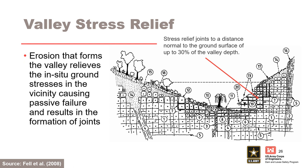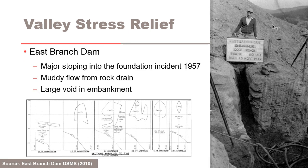One way rock defects are commonly formed in river valleys is due to stress relief. Erosion that forms the valley relieves the in situ ground stress in the vicinity, causing a passive failure and resulting in the formation of joints. This is very common in sandstone and shale geology. Vertical joints are typically oriented along the valley walls, creating an upstream-to-downstream seepage path across the dam. East Branch Dam is a case history where valley stress relief fractures caused a major internal erosion incident with internal migration; this case history will be discussed in a separate presentation. The volume of the void that was created is basically the size of a school bus.